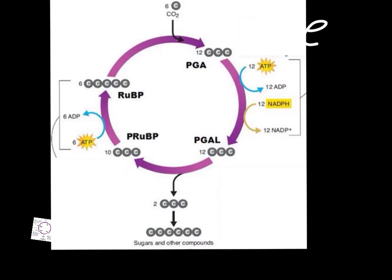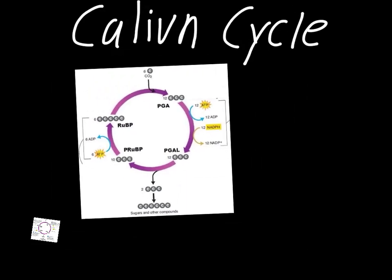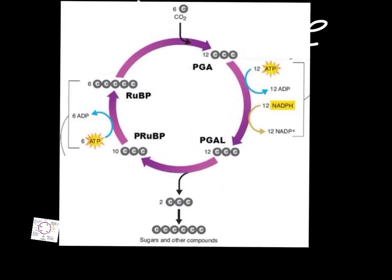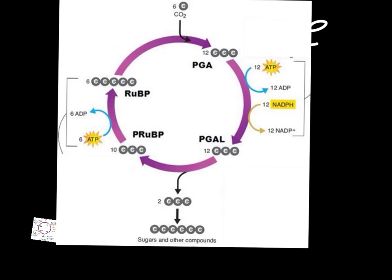As with all the cycles we've talked about — because after all this is the Calvin cycle — there's really no definitive starting or stopping point. But with most things, I think it's easier if you remember it in a certain order. So we're going to consider this process as starting with the carbon dioxide being added. If we follow around the diagram, what we're going to do is count the number of carbons that we have.